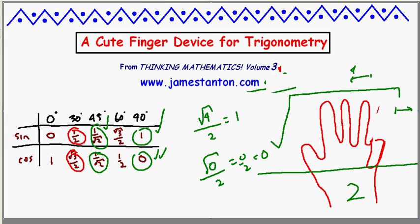So there's a cute little device: hold up your hand, you want sine and cosine of the standard angles, just put down the appropriate finger that represents that angle and do the square root of the digits on the top over two. Voila! Sine on the left, cosine on the right. By pure coincidence it just works out brilliantly this way.